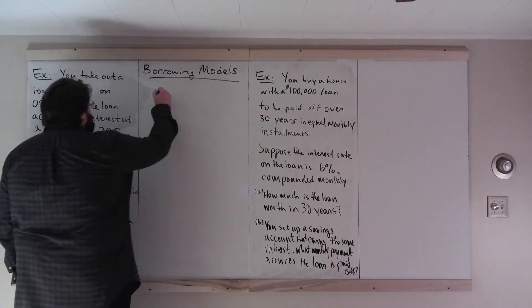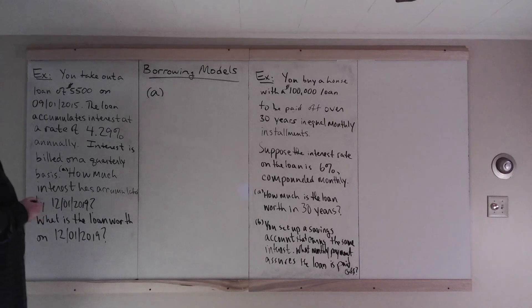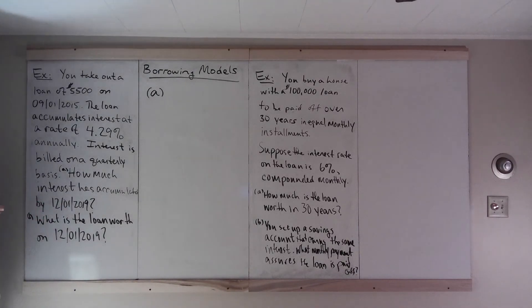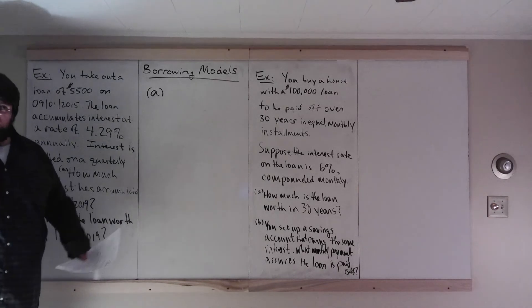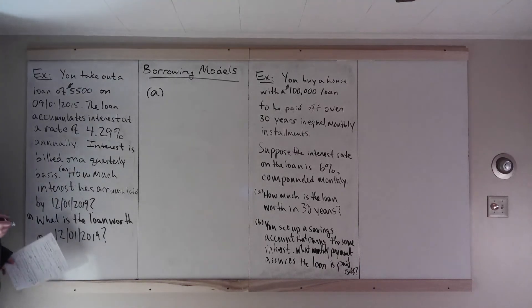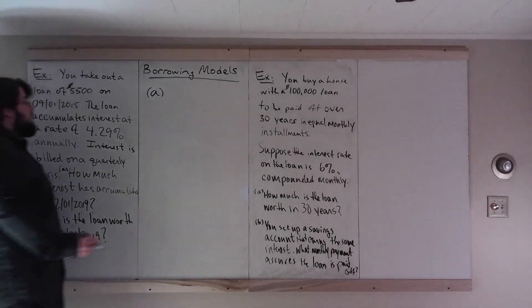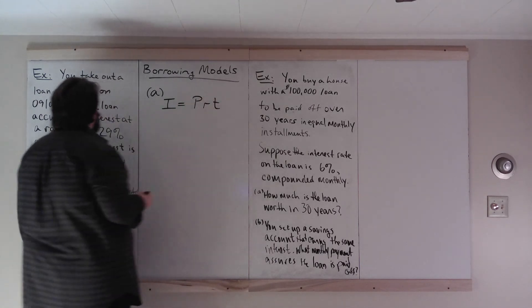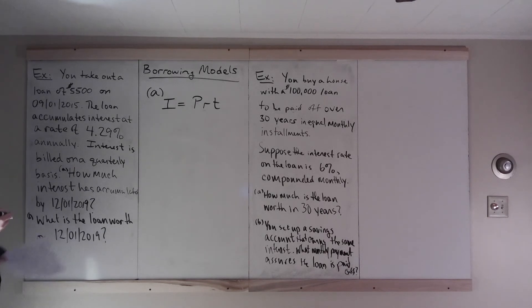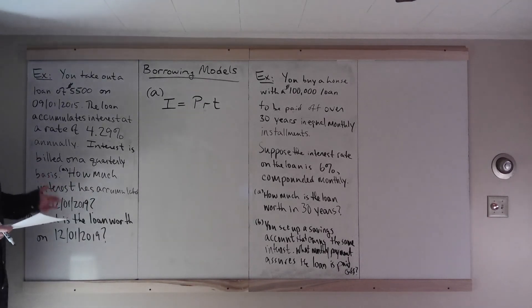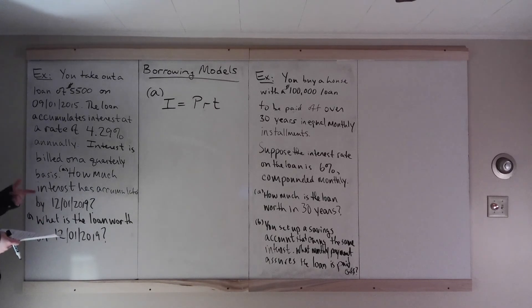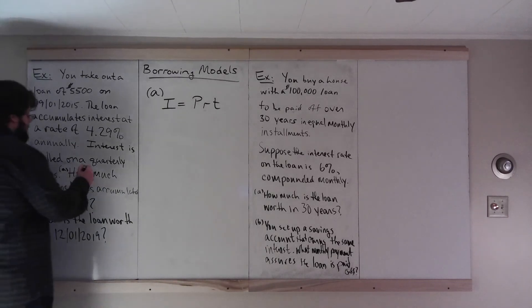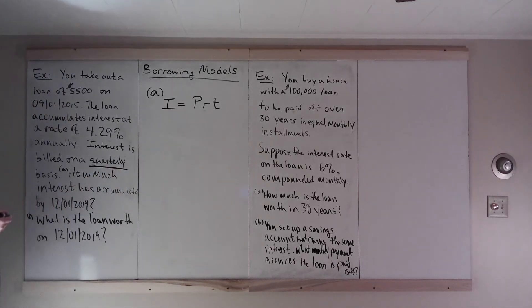So A, how much interest has accumulated? Well, right here, interest is billed on a quarterly basis. The loan accumulates interest at a rate of 4.29% annually. It's not accumulating interest on interest, it's just accumulating interest on the base amount. And we know how to compute interest in that case from our savings models. Interest was P, R, T, where P is the initial amount, the rate is the rate, and T is the time. But again, with these, we're going to want to keep our units organized. So right here, interest is billed on a quarterly basis. So let's turn R and T into quarterly numbers.